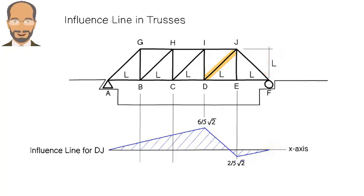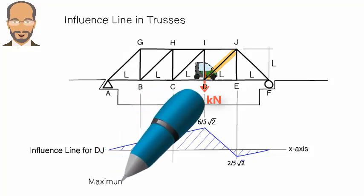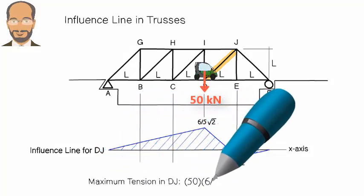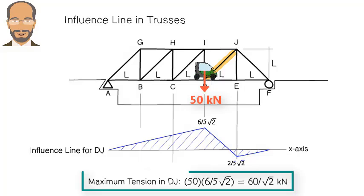It is important to note that an influence line is always drawn for a unit moving load. But once drawn, we can use the diagram for member force calculations for any load magnitude. For example, if the moving load has a magnitude of 50 kN, to determine the maximum tensile force in DJ due to the load, we simply multiply 50 by 6 over 5 square root of 2.